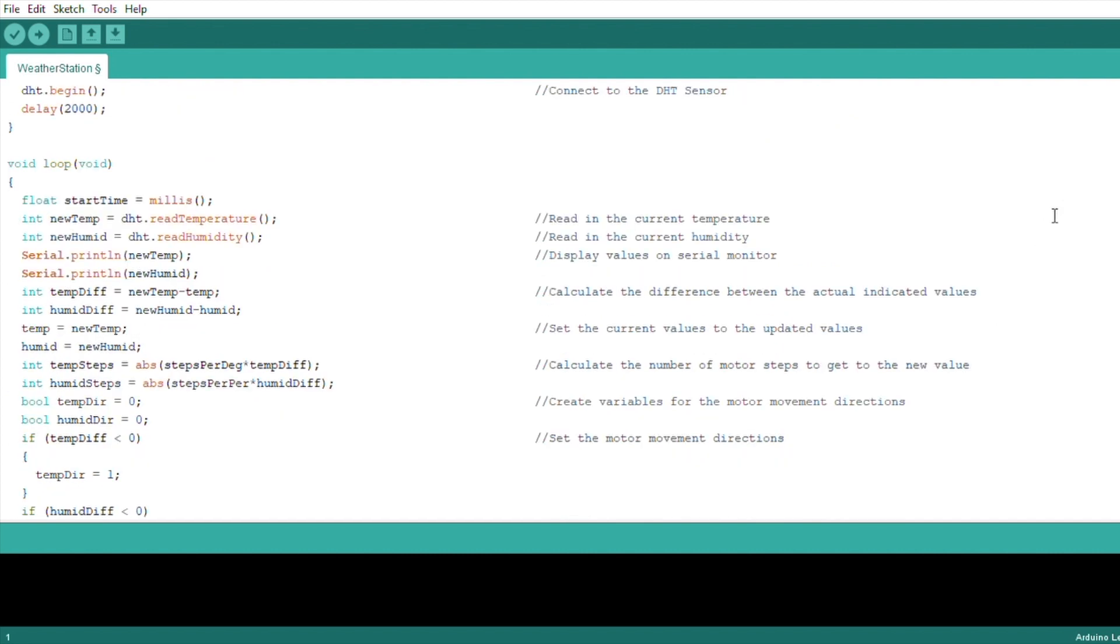In the loop function, we record the start time for the cycle, then take a new temperature and humidity measurement. We display these on the serial monitor and then calculate the difference in temperature and humidity from the last measurements taken. We can then replace the old measurements with the new measurements.